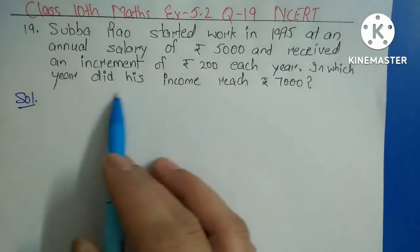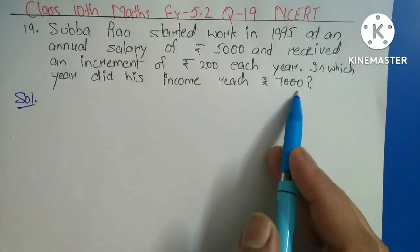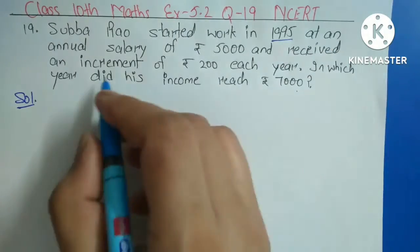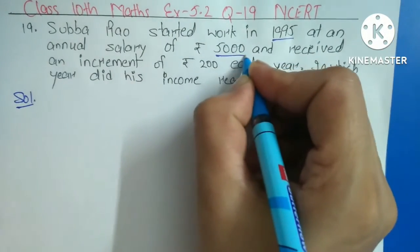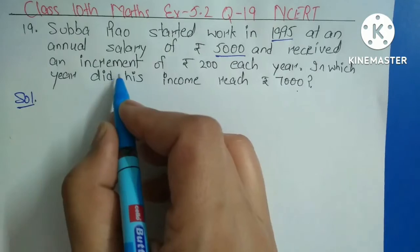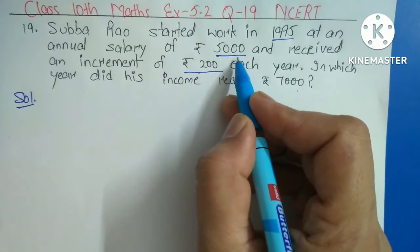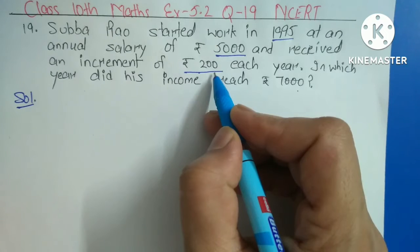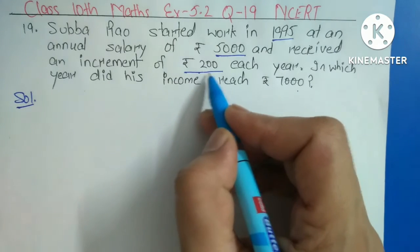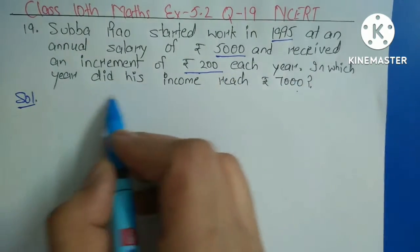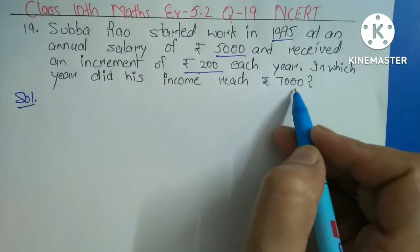In which year did his income reach Rs. 7,000? Means, Subha Rao started work in 1995 and at that time his salary was Rs. 5,000. And every year his income increased by Rs. 200. In which year did his income reach Rs. 7,000? Kis year mein uski income Rs. 7,000 ho jaegi? Clear?